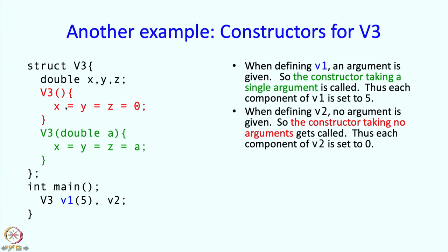This constructor will get called. V2.x, V2.y, V2.z will be set to zeros. That is how these constructors work.